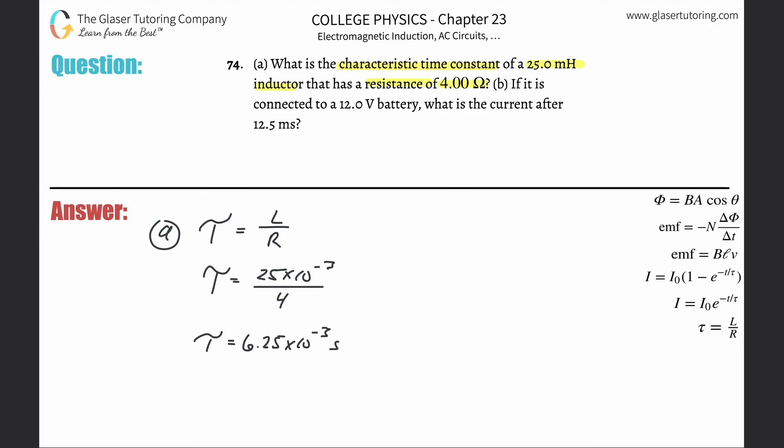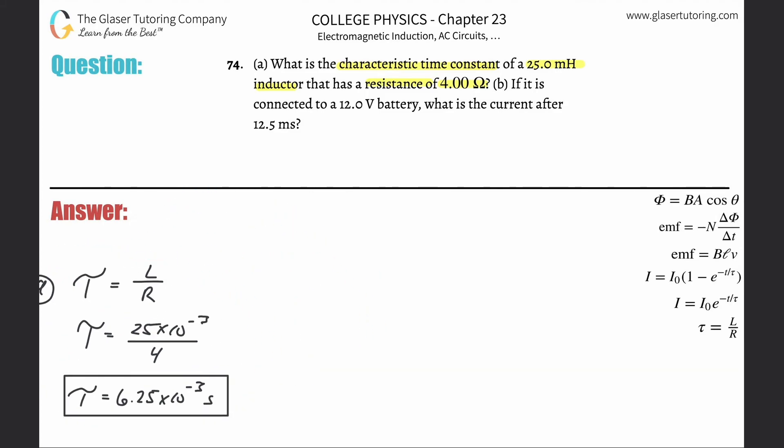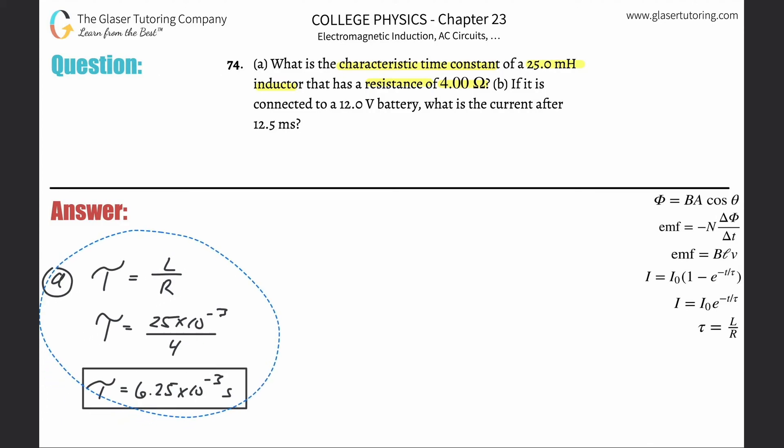That's the time constant now. All right. That takes care of letter A. And let's move this back. All right. So letter B, if it is connected to a 12 volt battery, what is the current after 12.5 milliseconds?